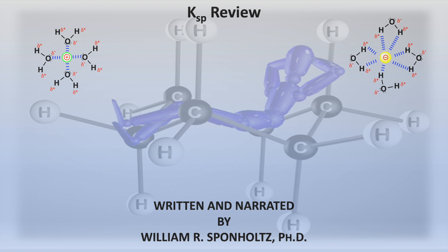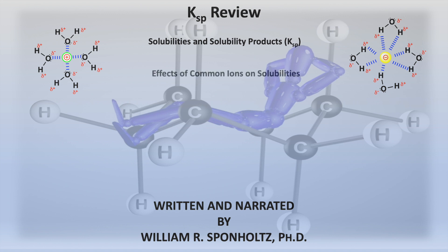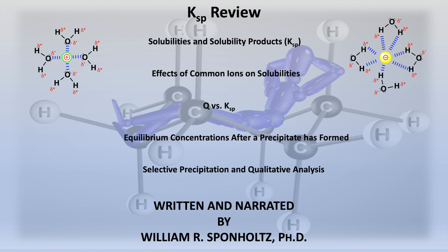In this review, we will explore the extent ionic compounds will dissolve in water by examining solubility products and solubilities of ions, as well as calculate effects common ions will have on these solubilities. In addition, we will examine the reaction quotient Q and compare to a given solubility product to predict if a precipitation will form given concentration of ions, and then calculate equilibrium concentrations of ions after a precipitate has formed. Finally, we will examine selective precipitation and qualitative analysis.